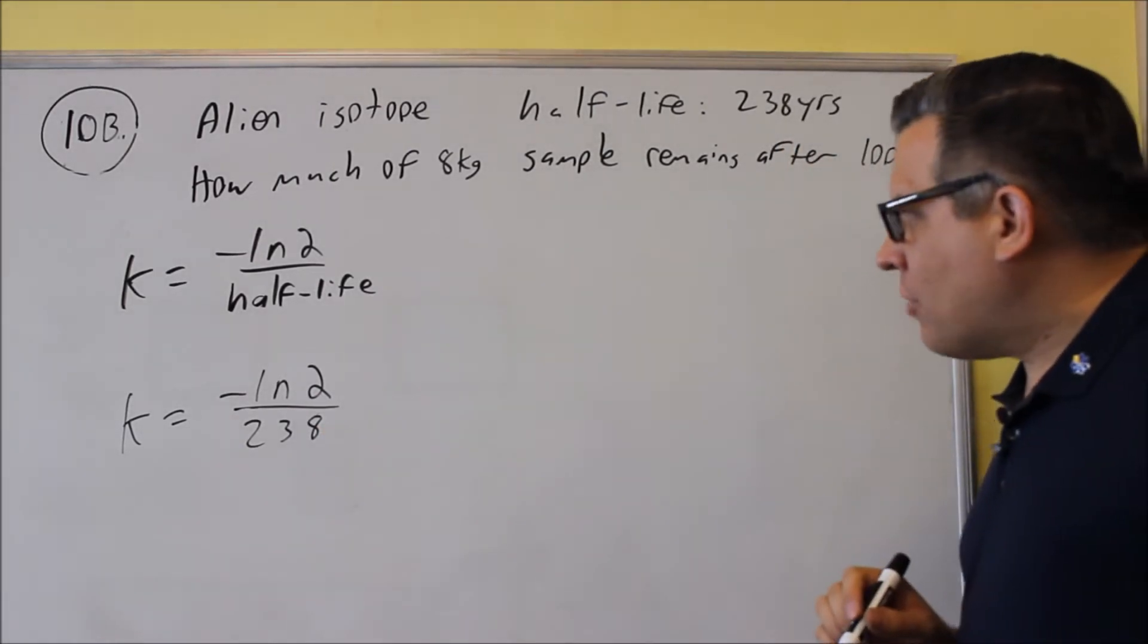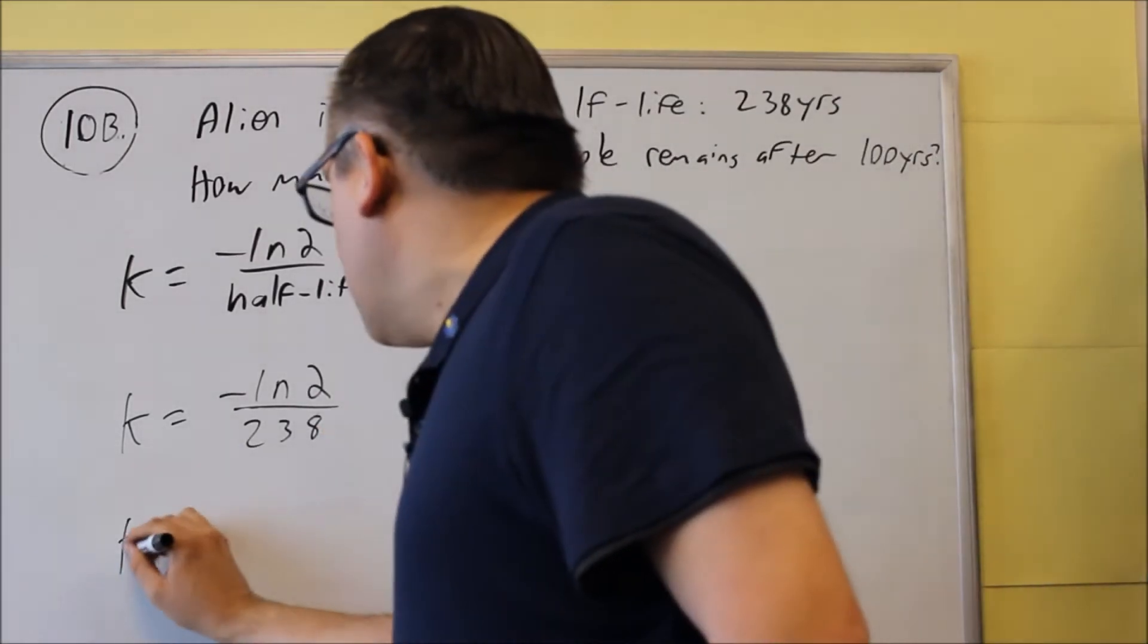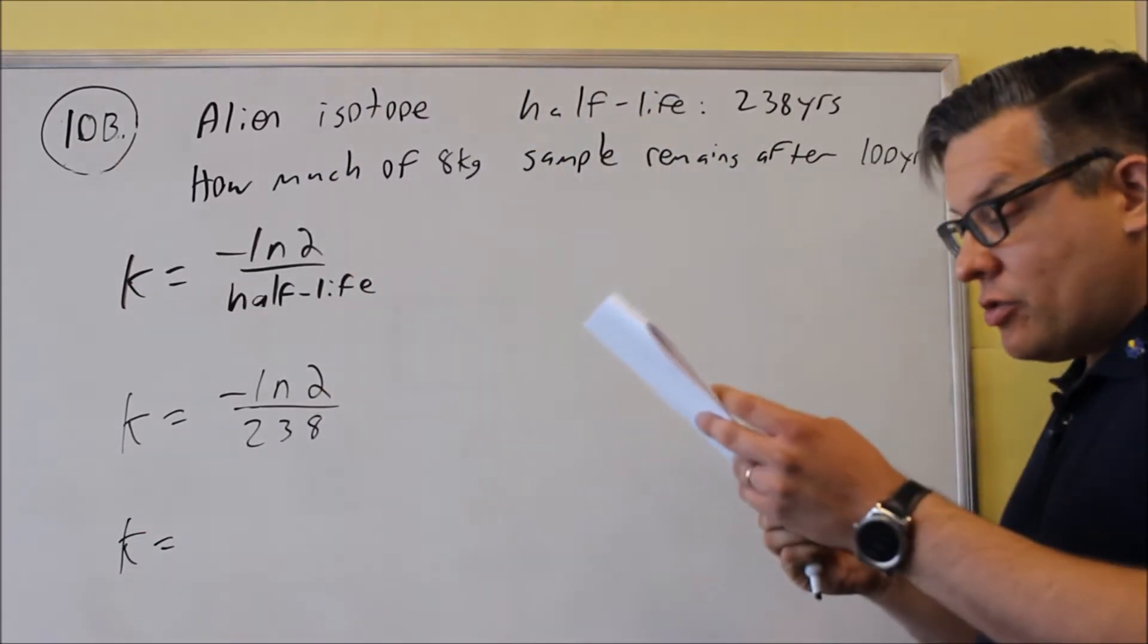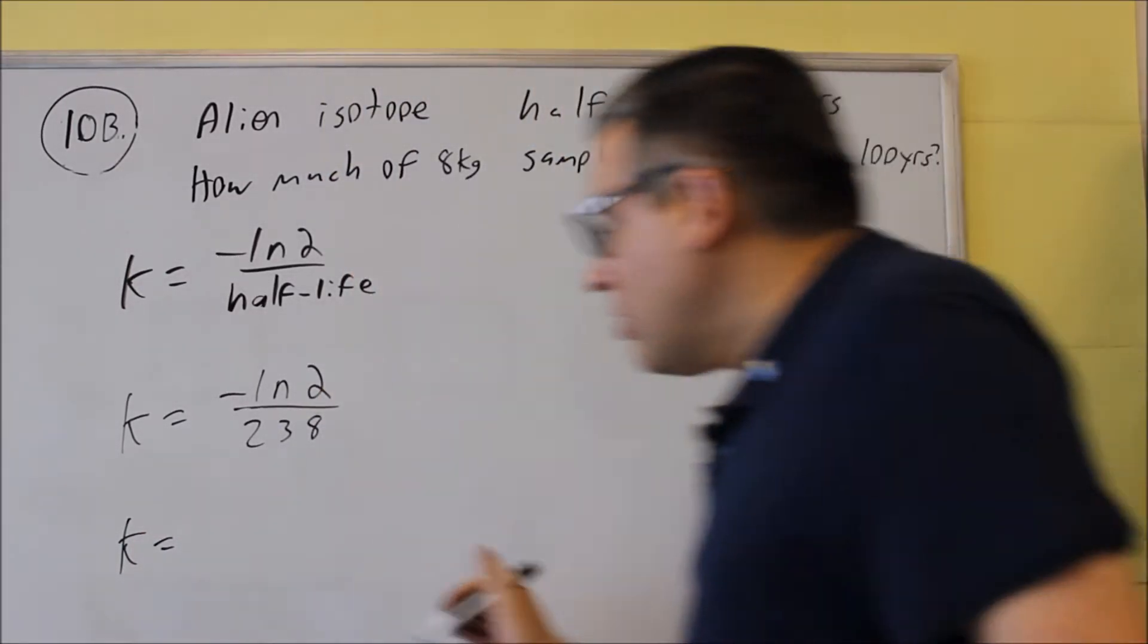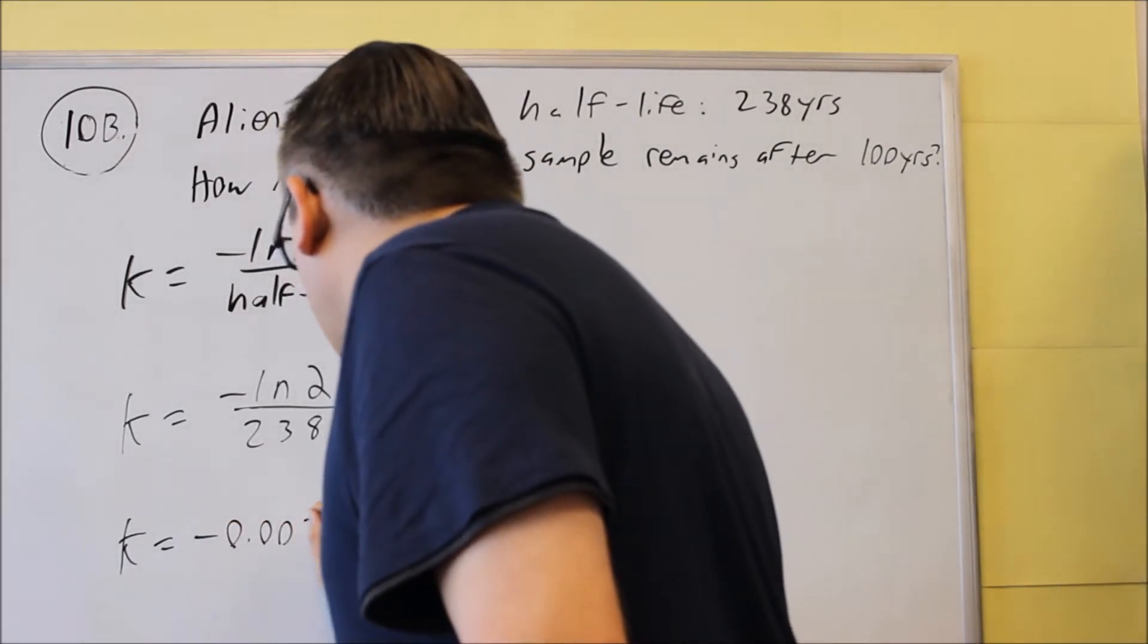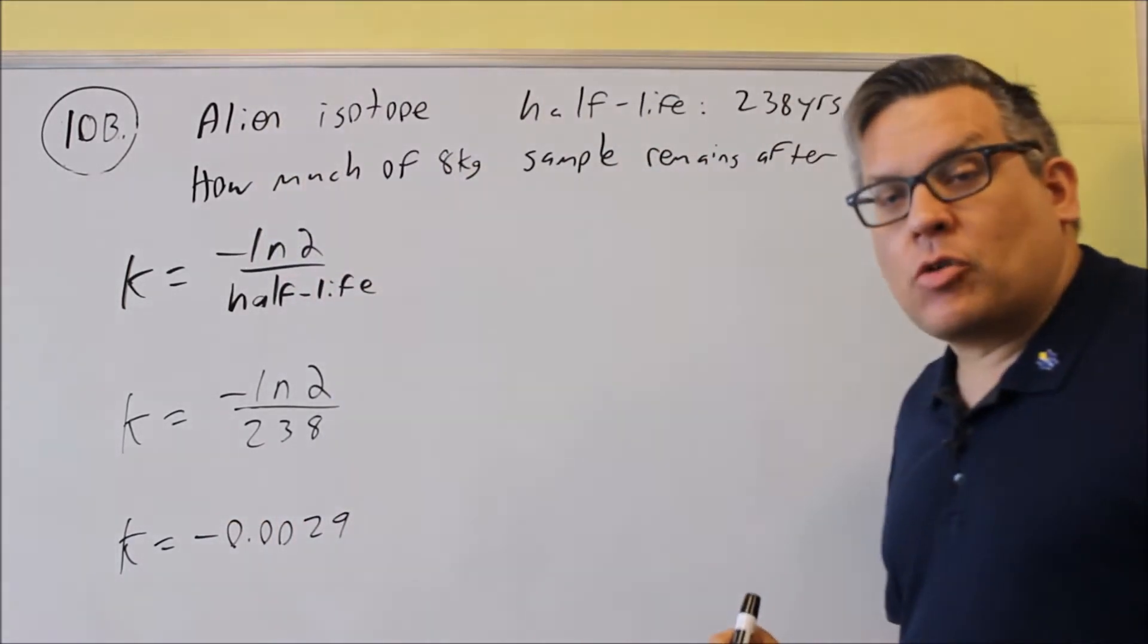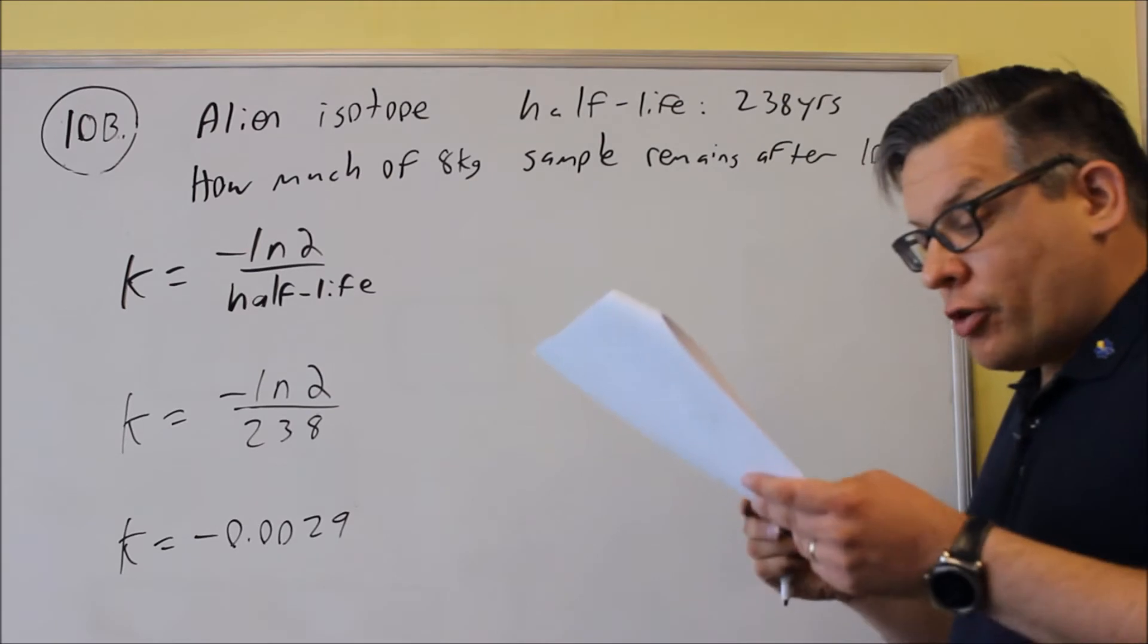As before, you can round this to four decimal places. So negative ln(2) over 238, you should get negative 0.0029 rounded to four decimal places.